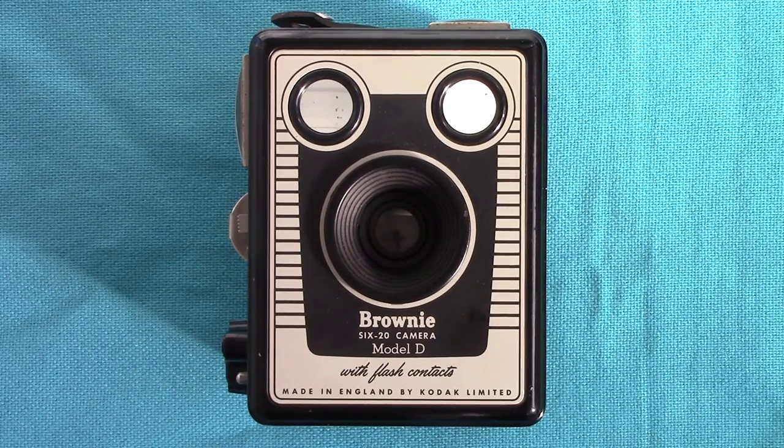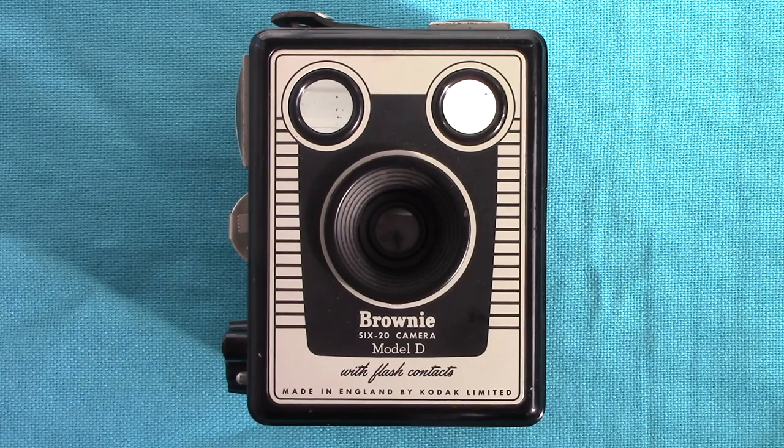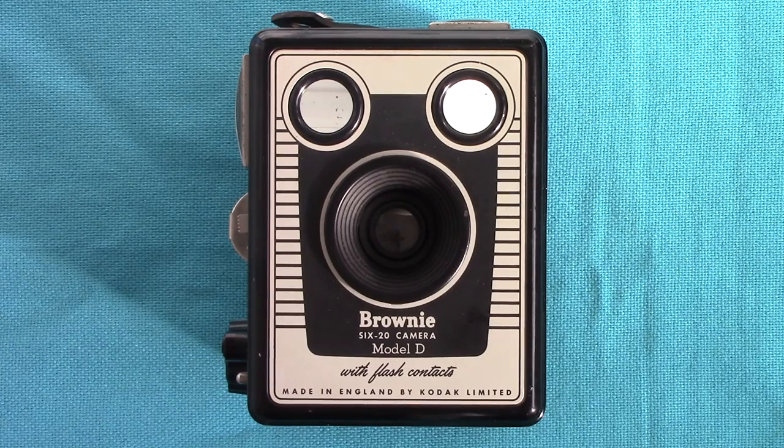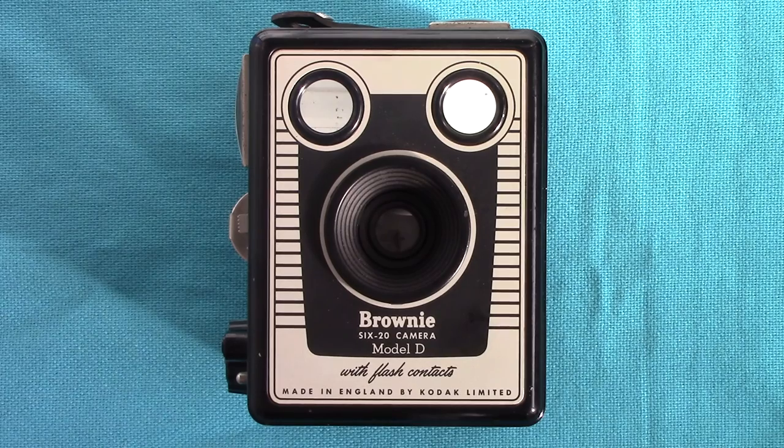Hello viewers, it's Peter Elgar Photography again with one of my treasures to show you. I've shown you many cameras, but here is a 1950s Brownie 620 camera Model D with flash contacts.